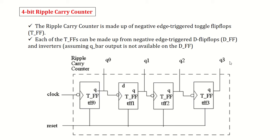Q2, Q3, and a reset signal is given to all the T flip-flops to reset the output. T flip-flops can be made from negative edge triggered D flip-flops. The D flip-flop is the subcomponent of the T flip-flop, and the T flip-flop is the subcomponent of the ripple carry counter.